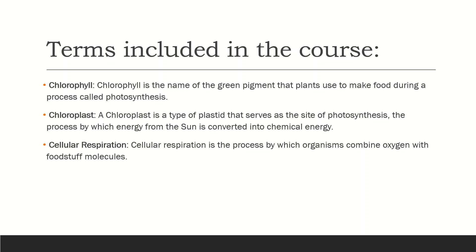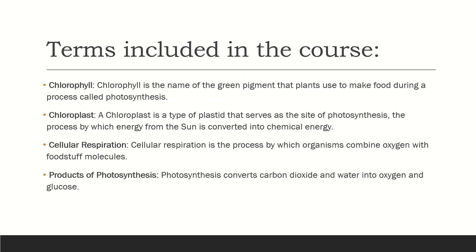The products of photosynthesis: photosynthesis converts carbon dioxide and water into oxygen and glucose. Glucose is used as food by the plant, and oxygen is a byproduct. These are some of the key terms that will be covered further in this course.